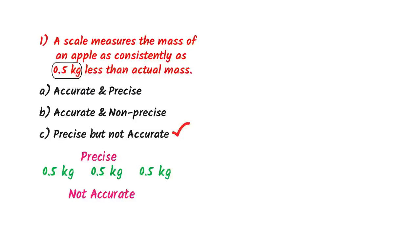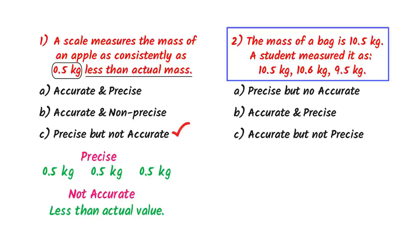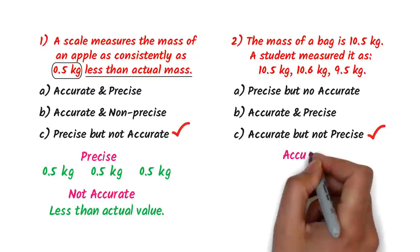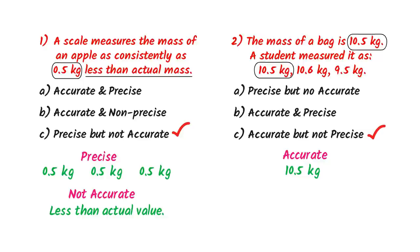Another MCQ: the mass of a bag is 10.5 kg. A student measured it as 12.5 kg, 10.6 kg, and 9.5 kg. Options: A) precise but not accurate, B) accurate and precise, C) accurate and not precise. The correct answer is C — it is accurate because one measurement (10.6 kg) is close to the actual value, but not precise because 9.5 kg is very different from 10.6 kg.